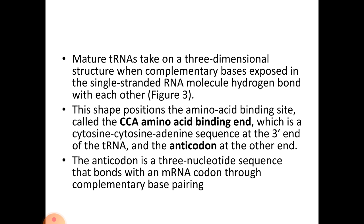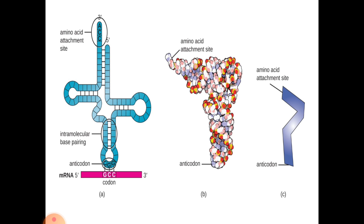Mature tRNAs take on a three-dimensional structure when complementary bases exposed in the single-stranded RNA molecule hydrogen bond with each other. This shape positions the amino acid binding site — called the CCA amino acid binding end, which is the cytosine-cytosine-adenine sequence at the 3' end of the tRNA — and the anticodon at the other end. The anticodon is a three-nucleotide sequence that bonds with an mRNA codon through complementary base pairing. The structure of a tRNA molecule shows the amino acid attachment site (CCA site) on the 3' end, the anticodon region which binds to the mRNA molecule, and the adjacent 3D structure with both the amino acid attachment site and anticodon site.